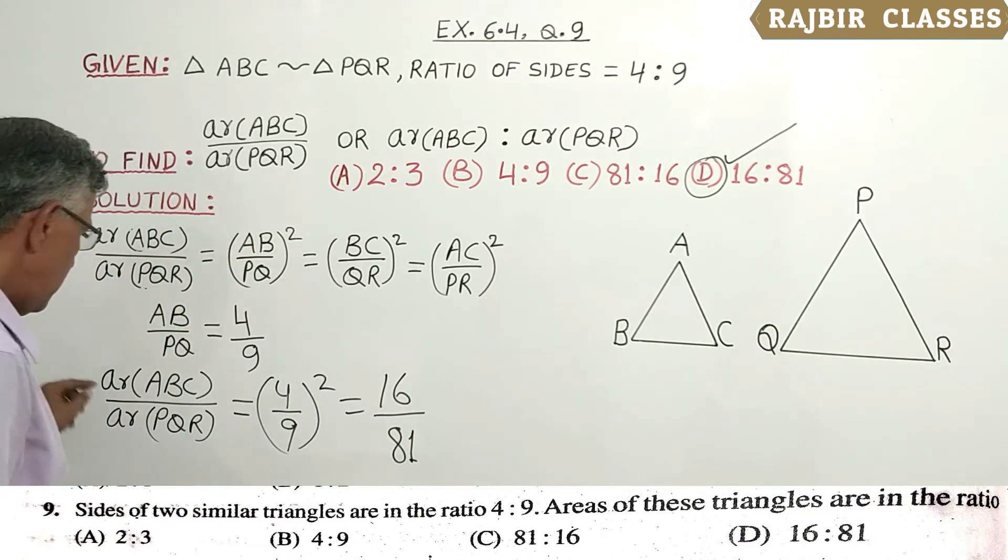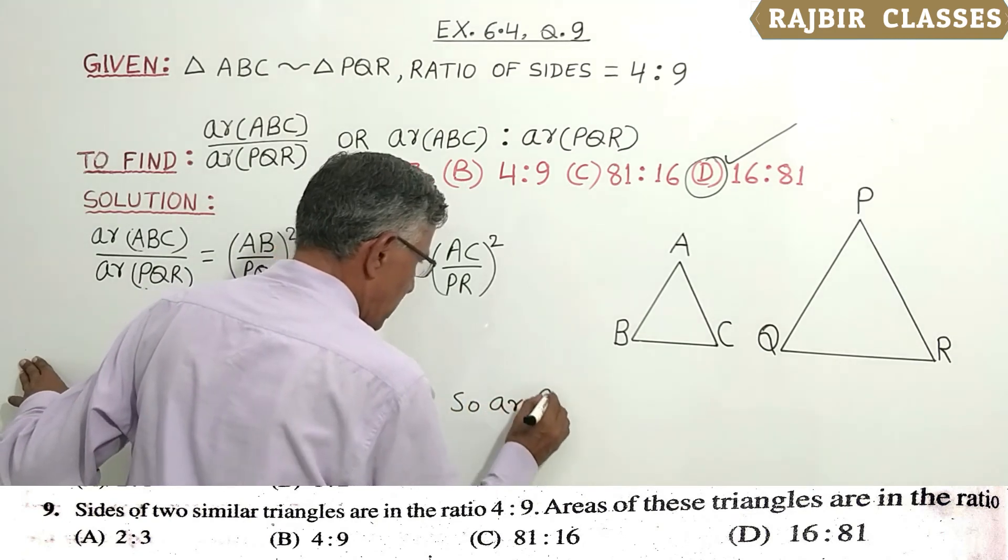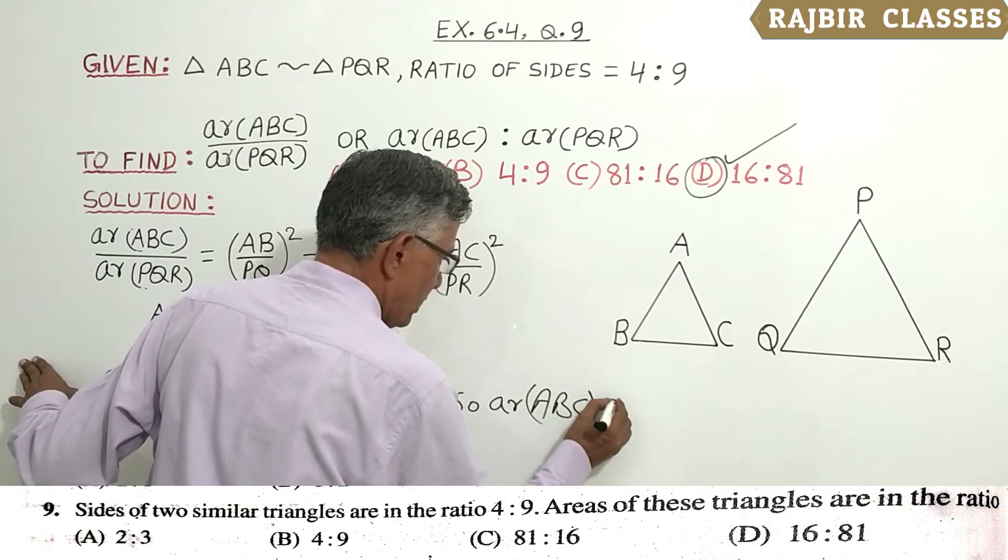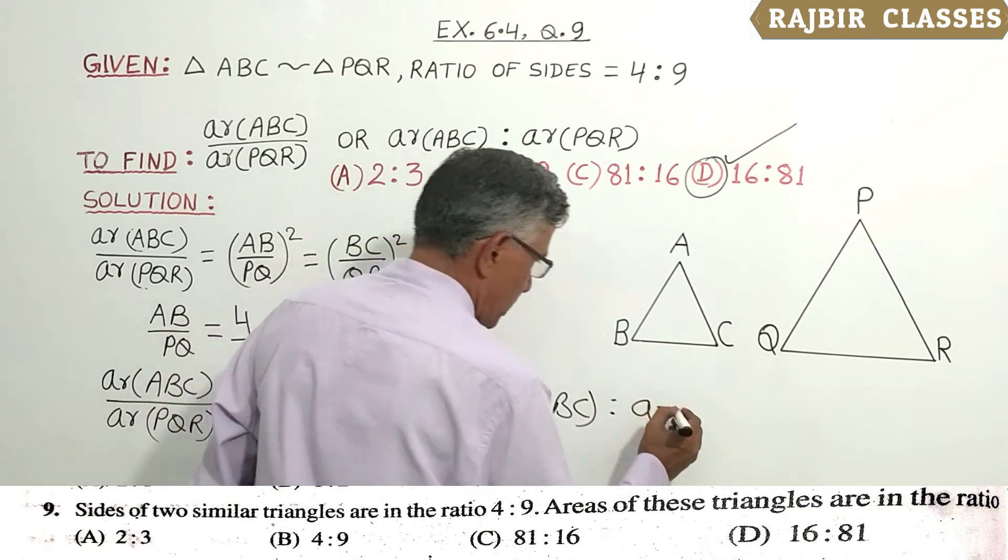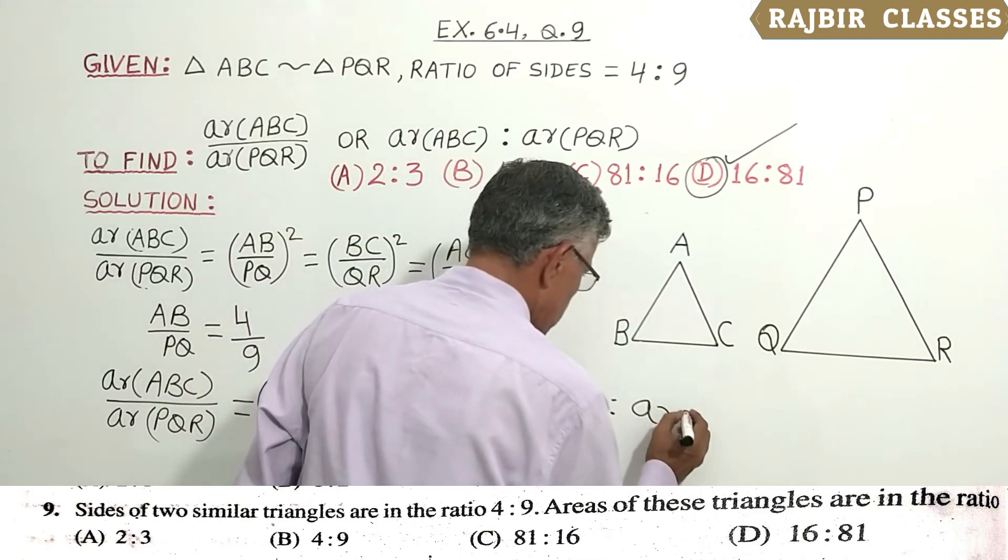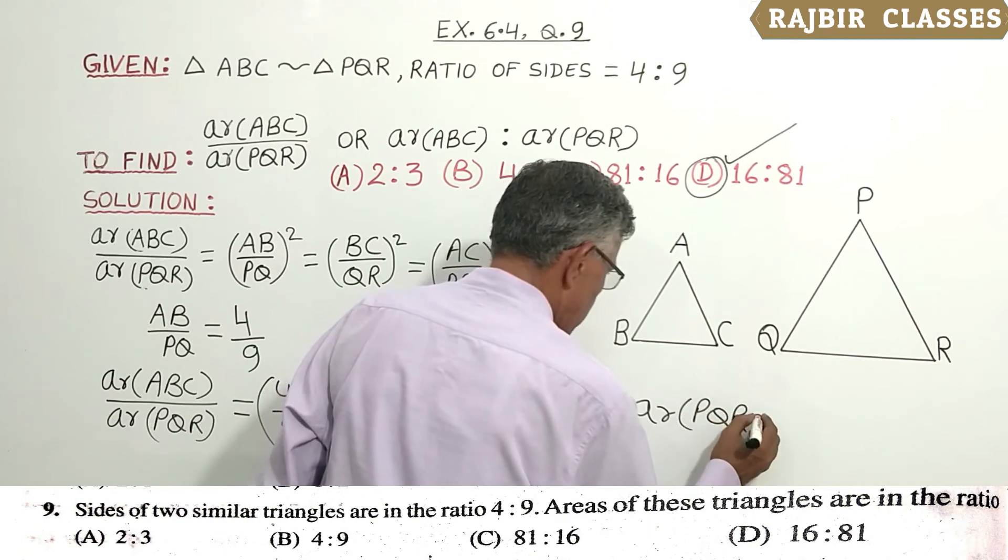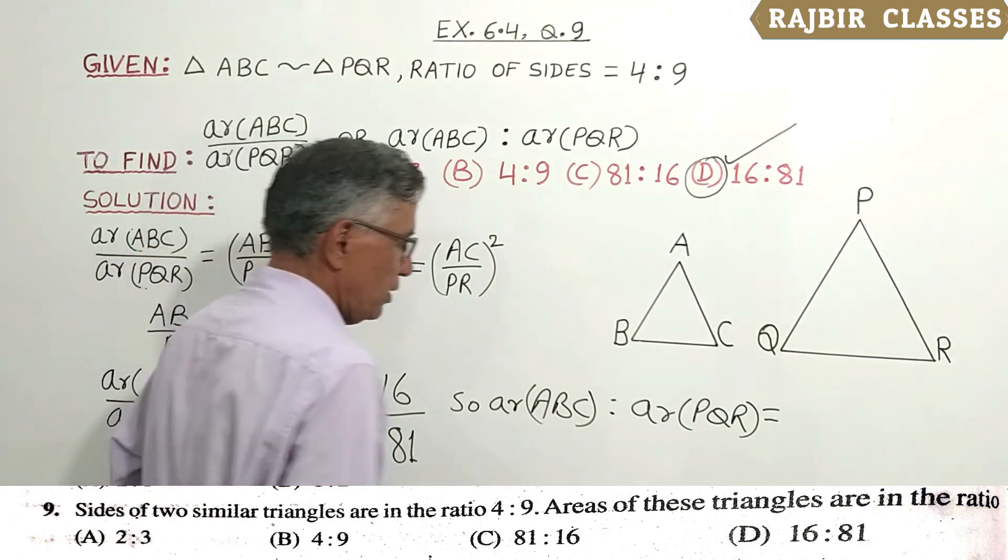So area ABC ratio area PQR is equal to 16:81.